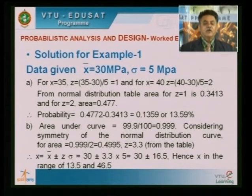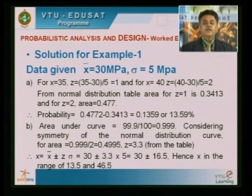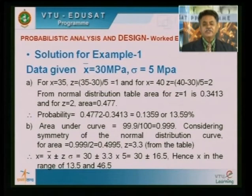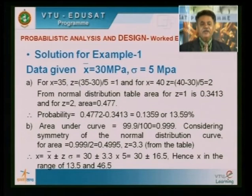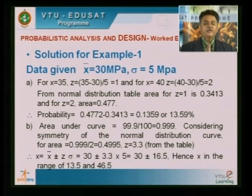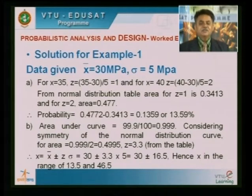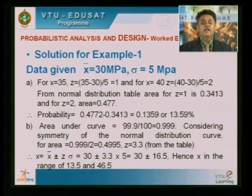For part B: determine the range in which strength falls with probability 99.9 percent. That means area = 0.999. Since the curve is symmetric, half the area is 0.999/2 = 0.4995, giving z = 3.3 from the table. Then x = x-bar ± z × sigma = 30 ± 3.3 × 5 = 30 ± 16.5. Therefore, the range is 13.5 to 46.5 MPa for a probability of 99.9 percent.